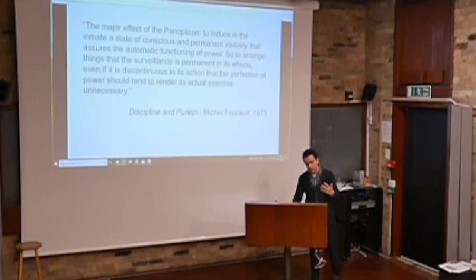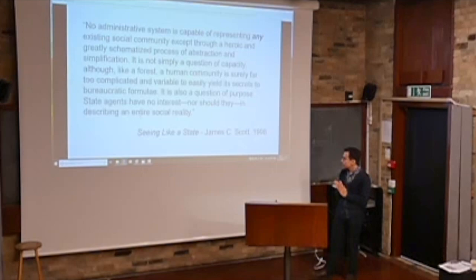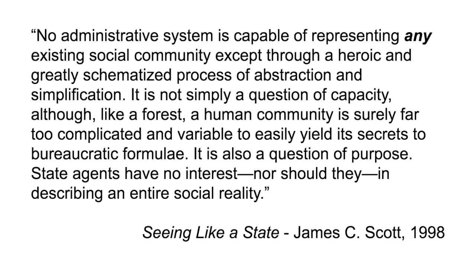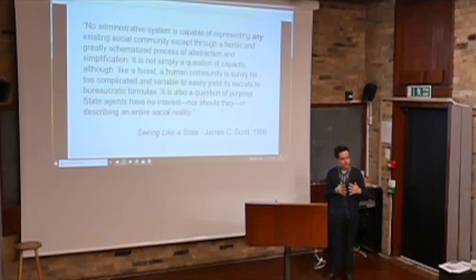I would like to question the commonly accepted claim that the Panopticon can model social institutions. From the 1998 book Seeing Like a State: 'No administrative system is capable of representing any existing social community except through a heroic and greatly schematized process of abstraction.' It is not simply an abstraction — it is an exaggeration. A human community is far too complicated and variable to yield its secrets to bureaucratic formulae, to the guard in the middle. State agents have no interest in representing an entire social reality. Google is uninterested in you as a person — they are interested in you as a set of data, a set of information. They collect information; they care about selling you ads.